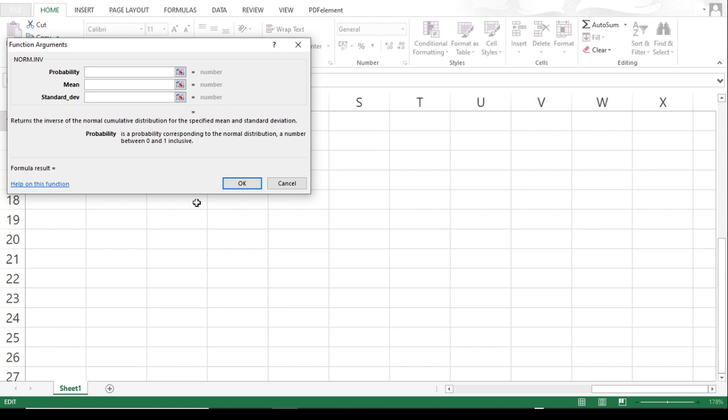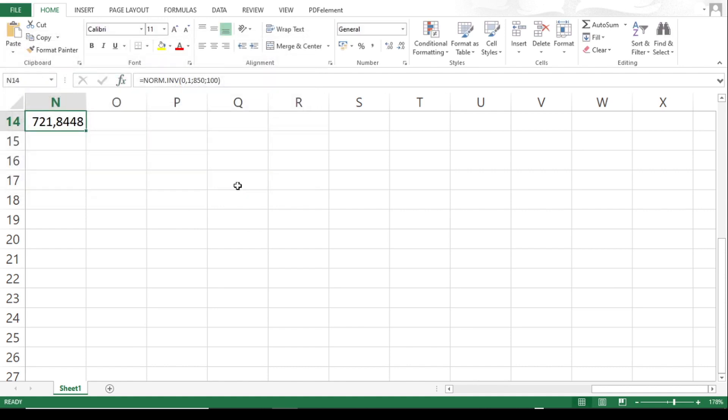My probability is 0.1. The mean is 850. My standard deviation is 100. And then I get 721.85. Again, this differs slightly from what we got when we did it by hand. And that's just because we made use of the normal tables that work only up to two decimals.